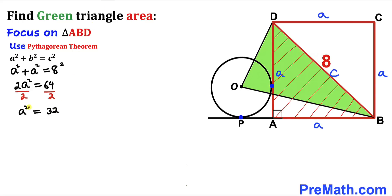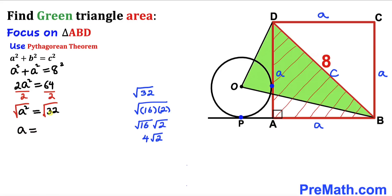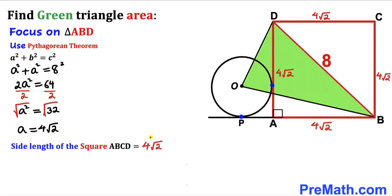Let's undo this square by taking the square root on both sides. On the left-hand side this turns out to be a, and the square root of 32 simplifies to 4√2. So our side length a turns out to be 4√2. Thus the side length of square ABCD is 4√2, and I've written these side lengths across the board as 4√2.